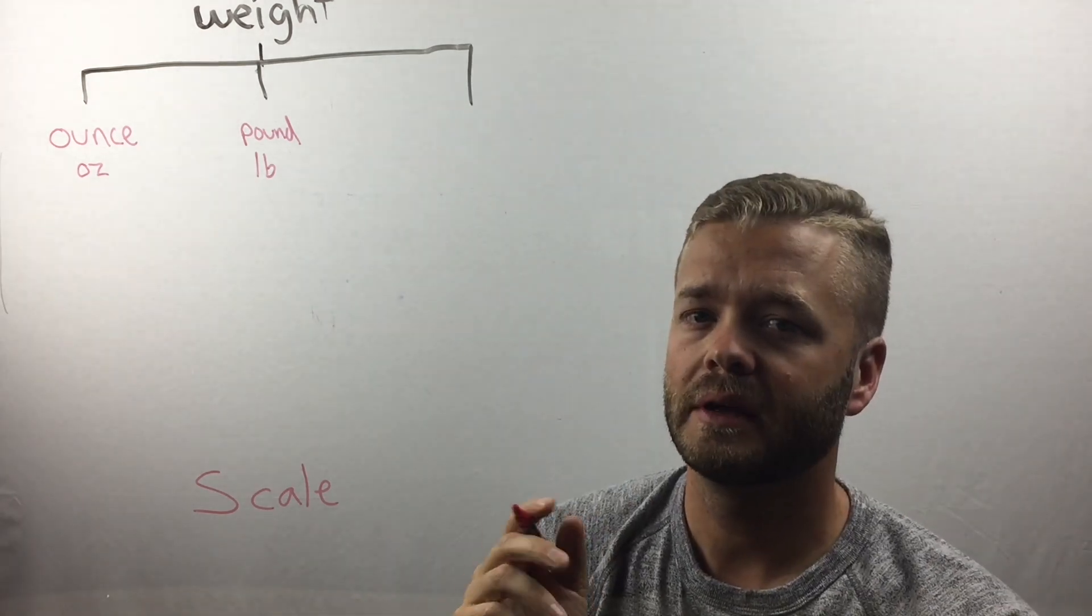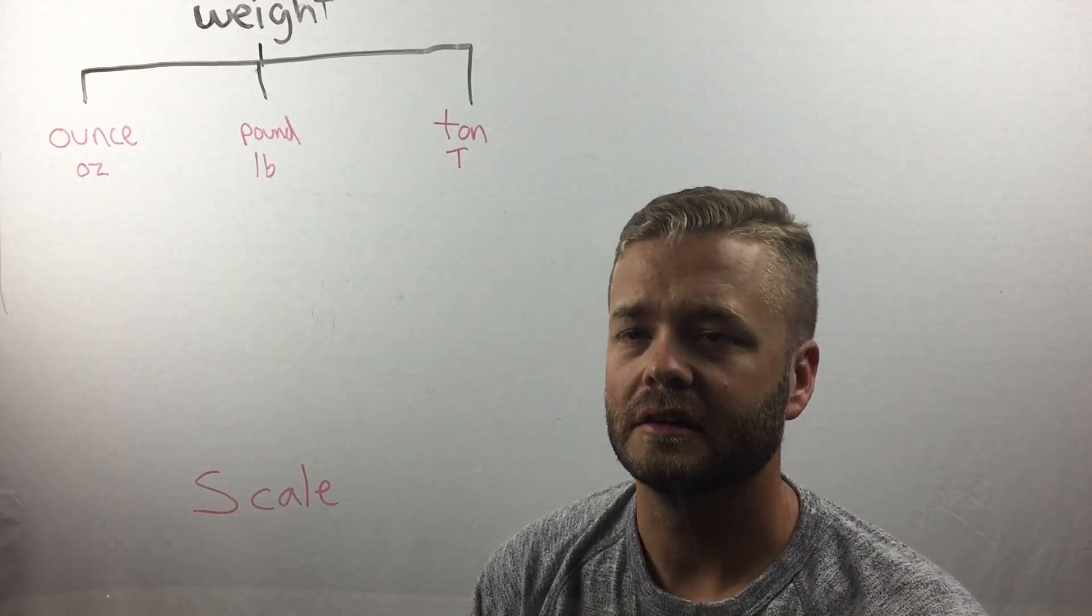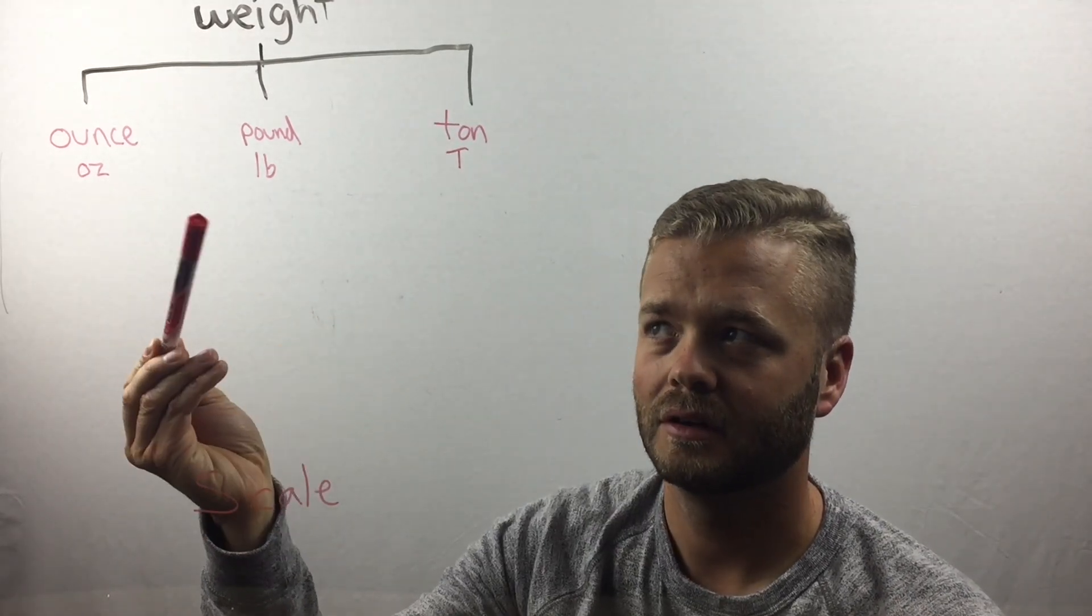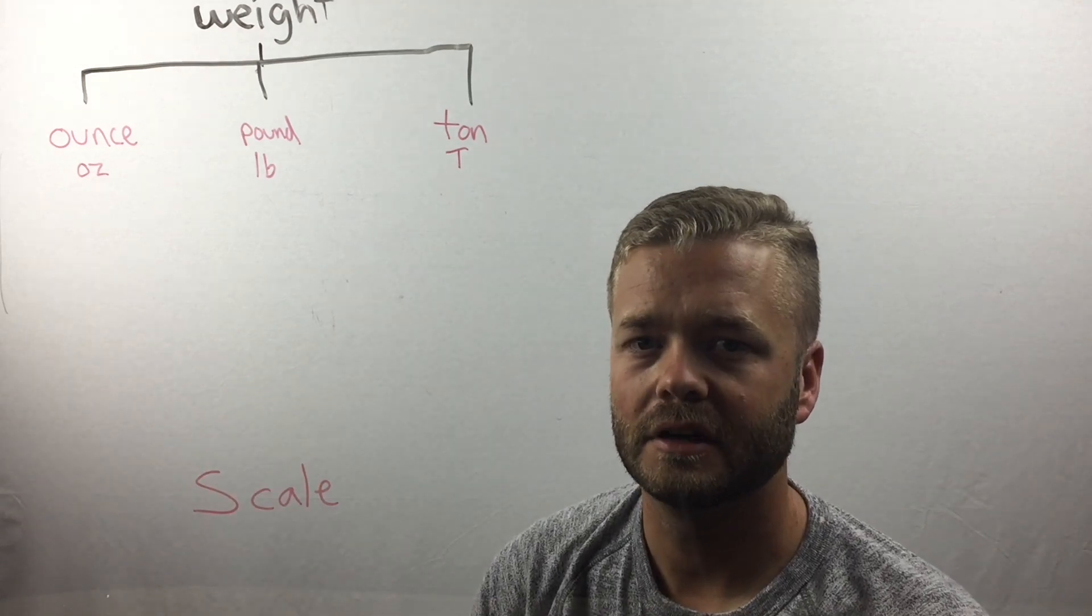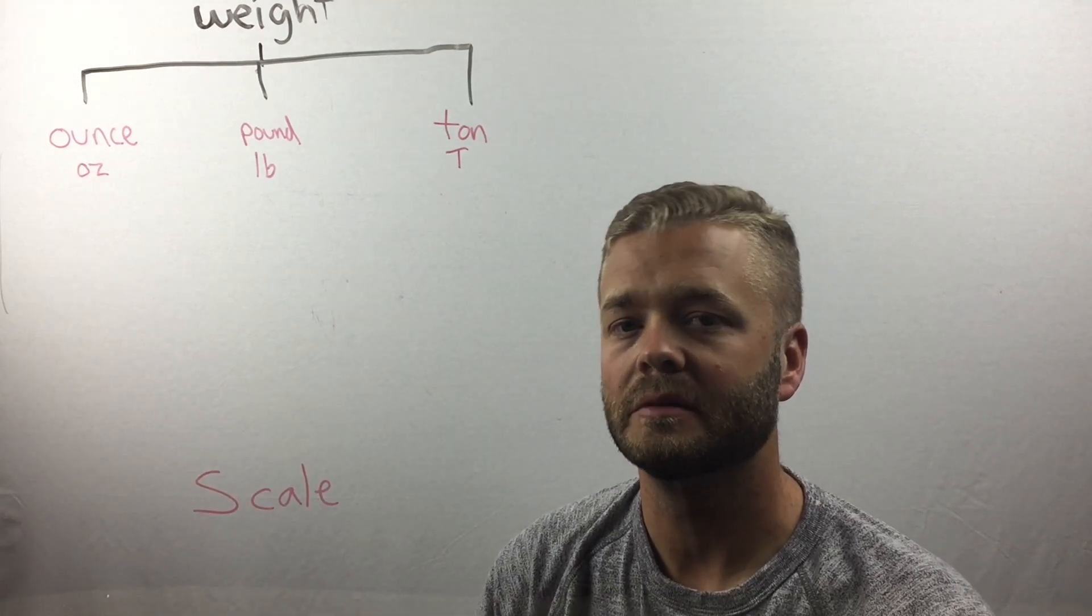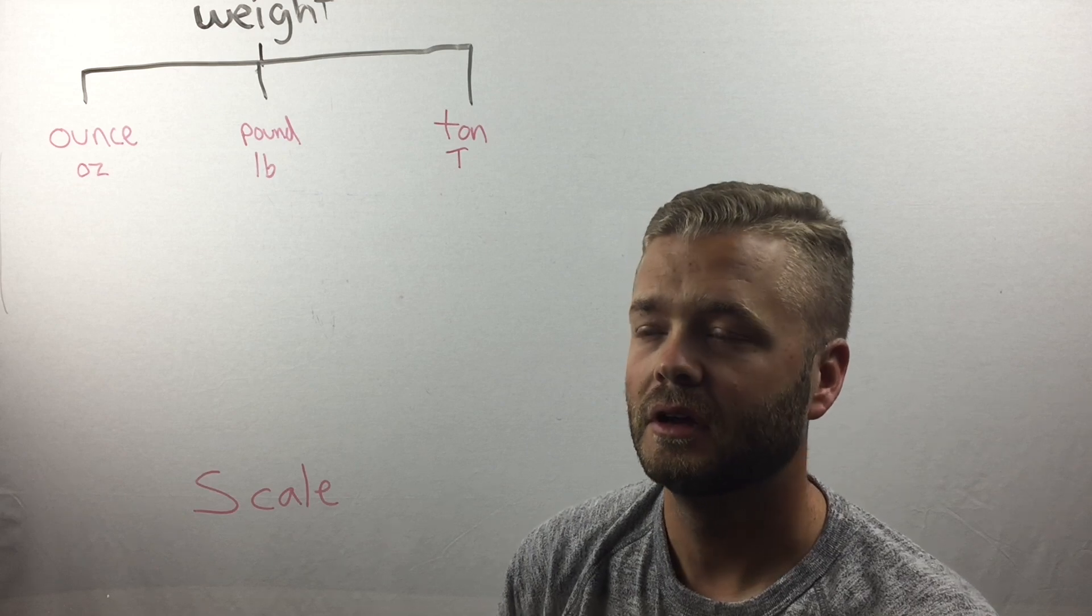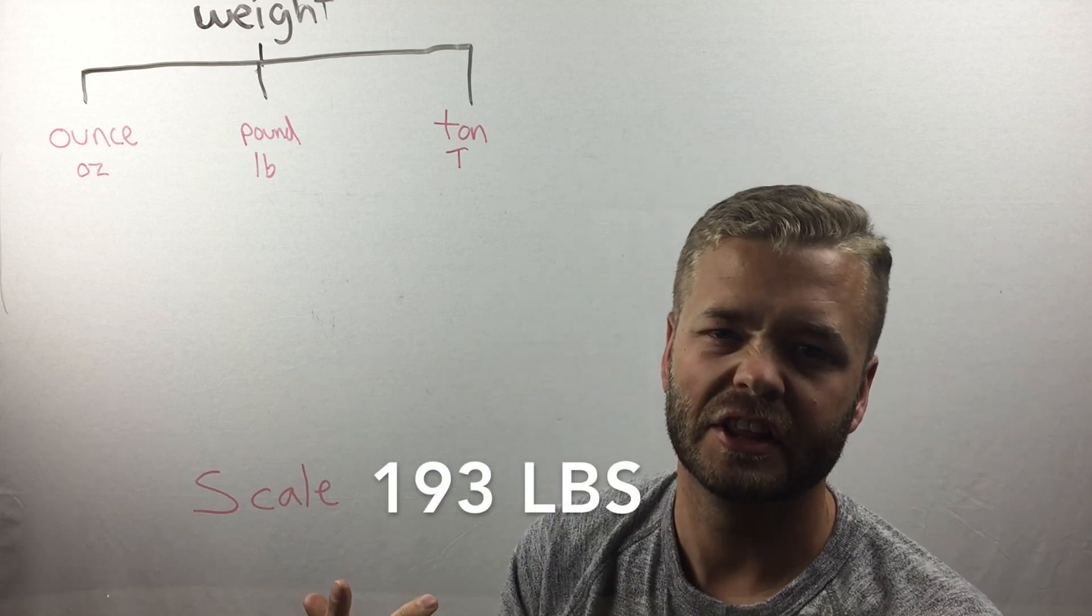The biggest measurement we have is a ton. Ounces are those tiny things. If I was going to measure this marker, I'd measure it in ounces. Pounds are heavier things. People weigh in pounds. In fact, I weigh close to 200 pounds. 193 to be exact.